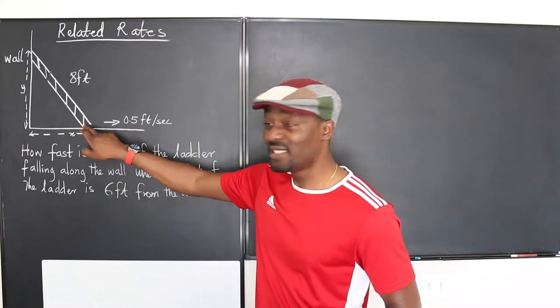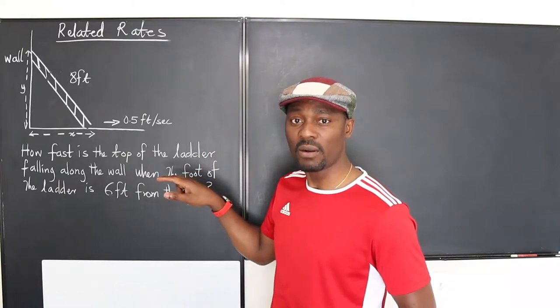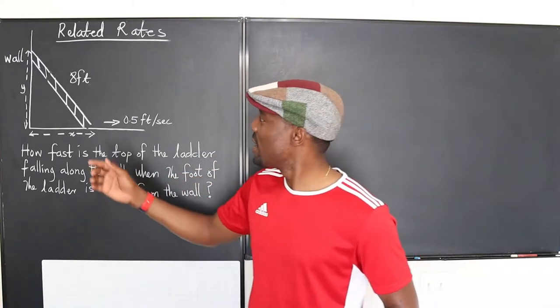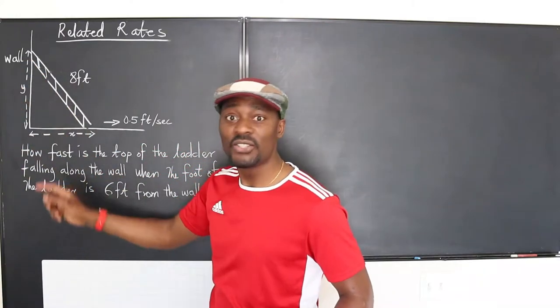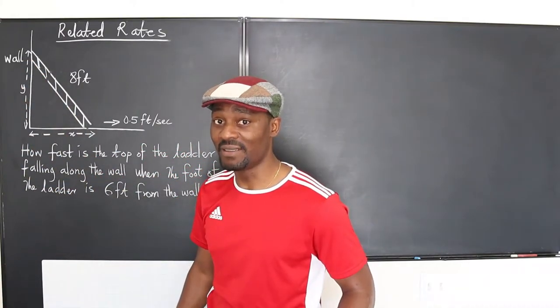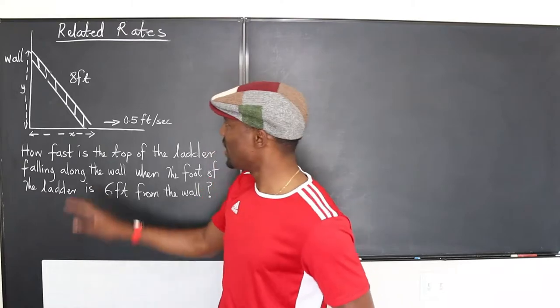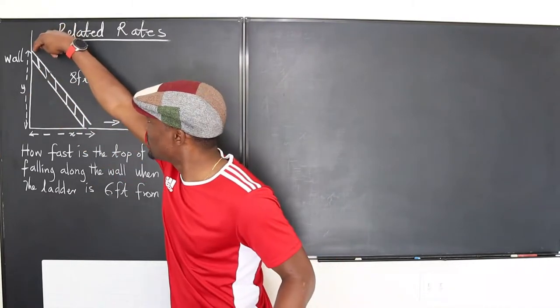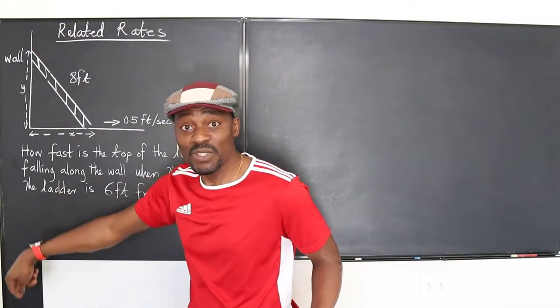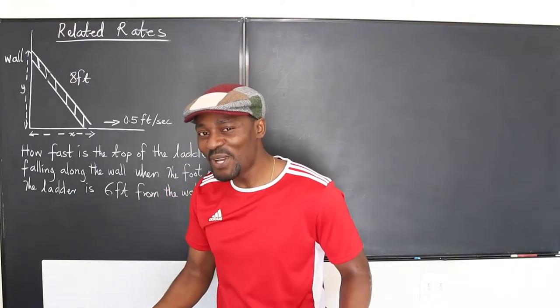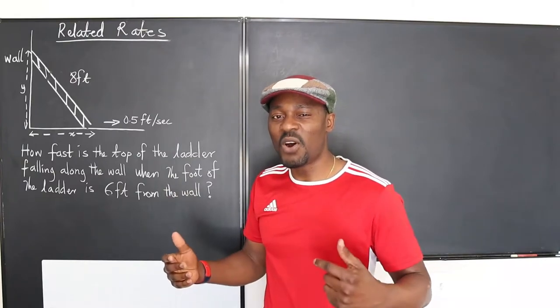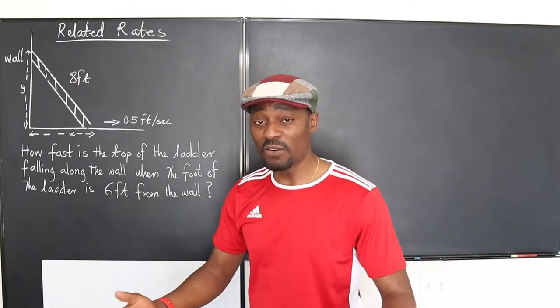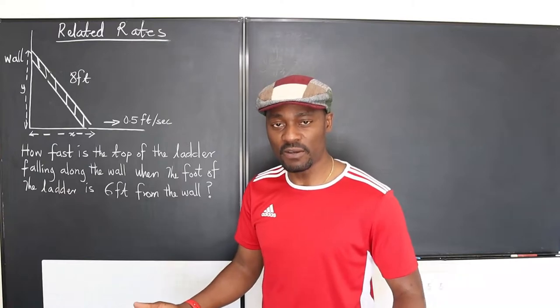That's how fast this thing was moving away from the wall. We just want to know how fast is the top of the ladder falling. Johnny is definitely falling, but how fast was he going down? That's what we're going to do today. This is one of those related rate questions that are very easy to solve, but you just have to know what to do.